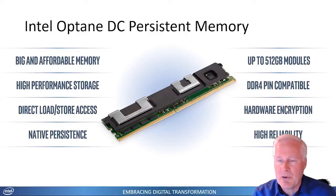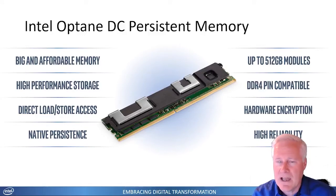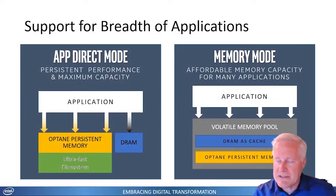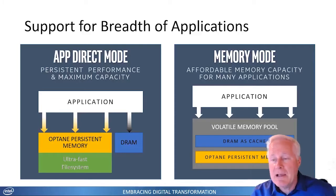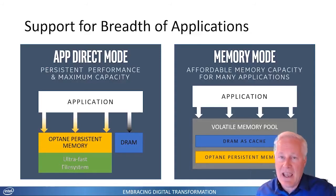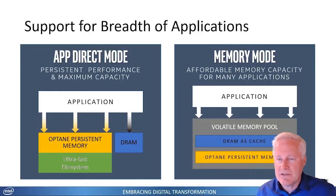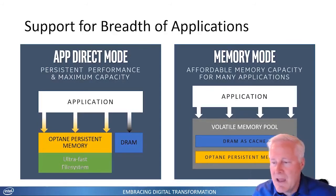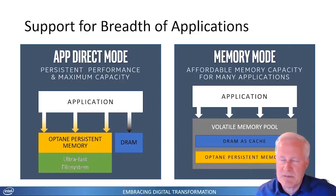Right now it's already making profound changes in how it's being used in databases — Oracle is starting to use it in their Exadata platform, as well as SAP HANA. There are two main modes. The first is memory mode, where you use persistent memory just like normal memory. Your DDR4 memory acts as a cache to the persistent memory, giving you the speed you need. In most applications, performance is comparable to straight DDR4 and you won't see a change at all.